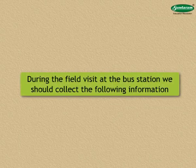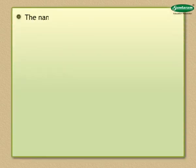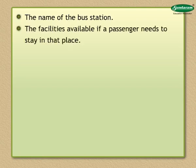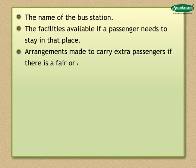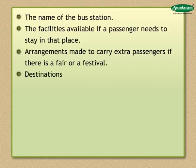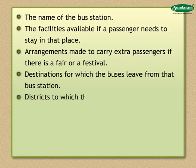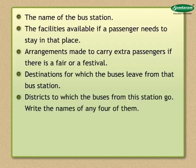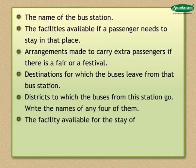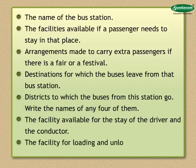During the field visit at the bus station, we should collect the following information: The name of the bus station. The facilities available if a passenger needs to stay in that place. Arrangements made to carry extra passengers if there is a fair or a festival. Destinations for which the buses leave from that bus station. Districts to which the buses from this station go. Write the names of any four of them. The facility available for the stay of the driver and the conductor. The facility for loading and unloading luggage.